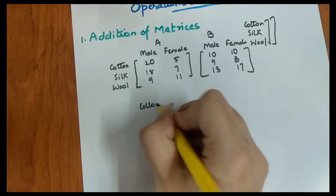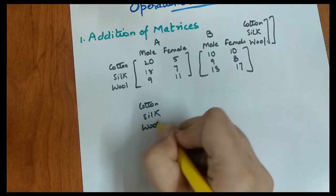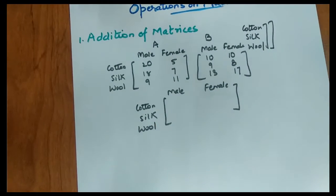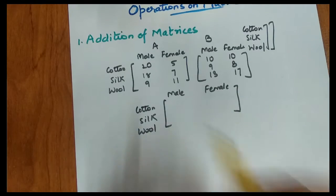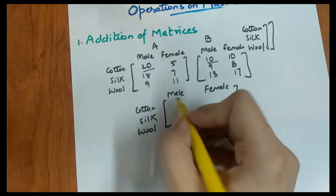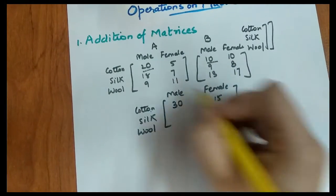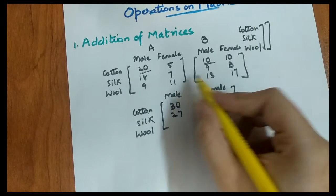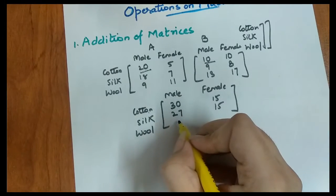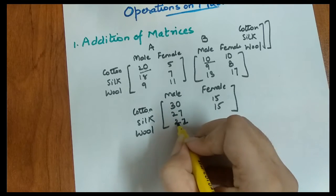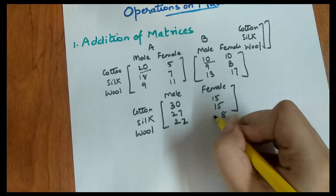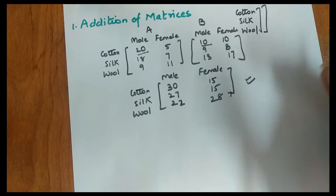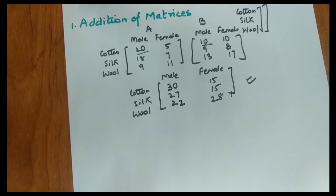We are given three materials: cotton, silk, and wool. We need to find the total number of male and female workers regardless of which godown they work in. We simply add: male workers on cotton — A is 20 and B is 10, so 30. Then 15, 27, 7, 8 giving 15, and 21, 22 giving 28. This is basically the situation where we need to find a total — we use the operation of matrix addition.